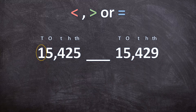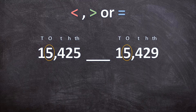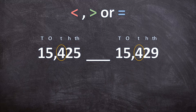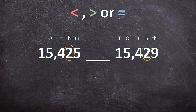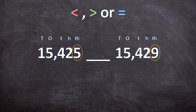First we have one and one in the tens place — they are equal. In the ones place we have five and five — equal again. Moving to the decimal place values: in the tenths we have four and four, still equal. In the hundredths we have two and two. So we move on to the thousandths, where we have five and nine. Nine is bigger than five, so 15,425 is going to be smaller than 15,429.